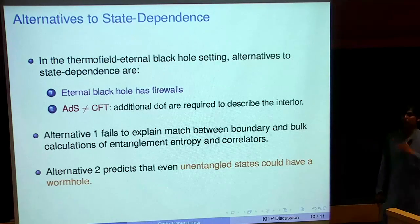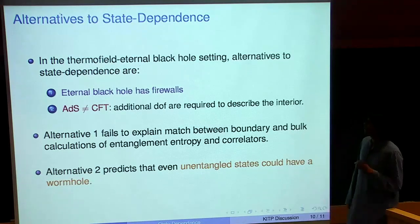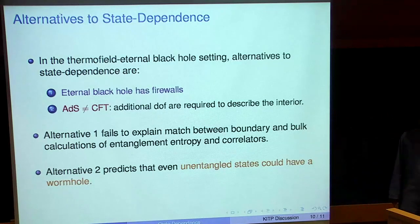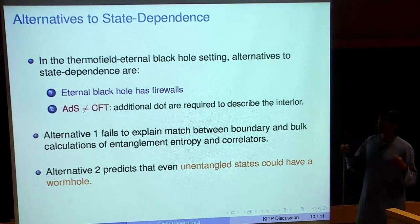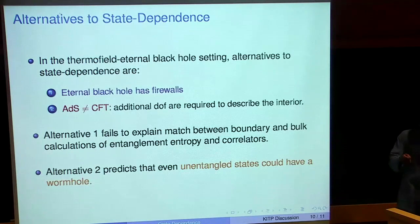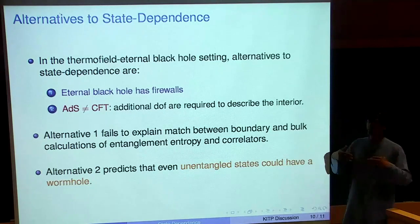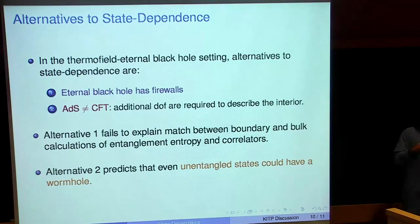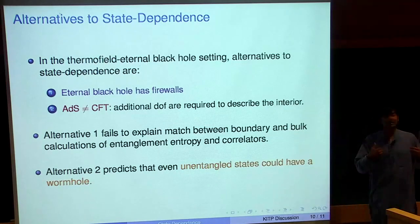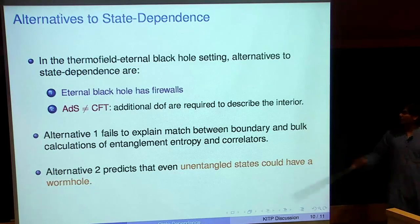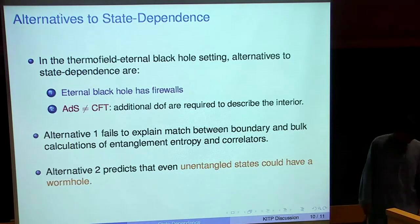There are alternatives to state dependence in the thermofield double. If you don't believe in state dependence, either the eternal black hole also has firewalls — contradicting other calculations suggesting a smooth interior — or the other alternative, which is even more radical: AdS/CFT is not correct at all, and you need superselection sectors to describe the interior. If you believe in superselection sectors, you get unusual predictions, such as unentangled states having a wormhole. These are the only two alternatives to state dependence I know of.